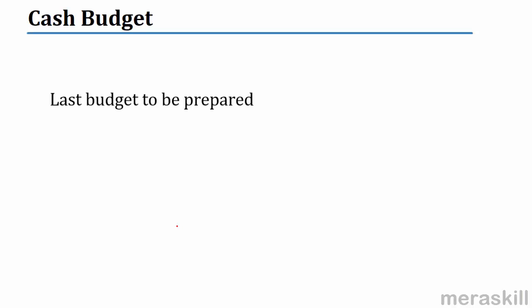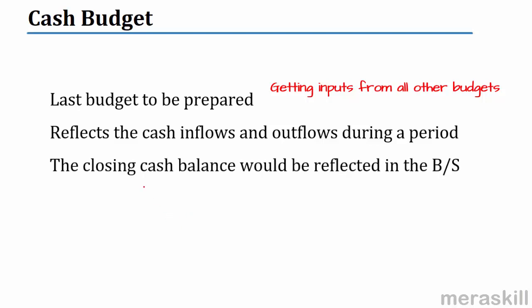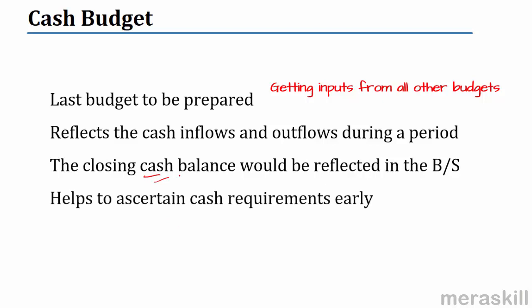What about the cash budget? Cash budget is the last budget to be prepared after getting inputs from all other budgets. We get the sales income, expenses for material, labor, overheads, selling and distribution, etc. We also get the cash inflows and outflows from the capital budget, and then we can make the cash budget. Cash inflows and outflows during a period and the closing cash balance are reflected in the balance sheet. This also helps us to ascertain cash requirements early so that we can arrange for financing if required, whether long-term or short-term.